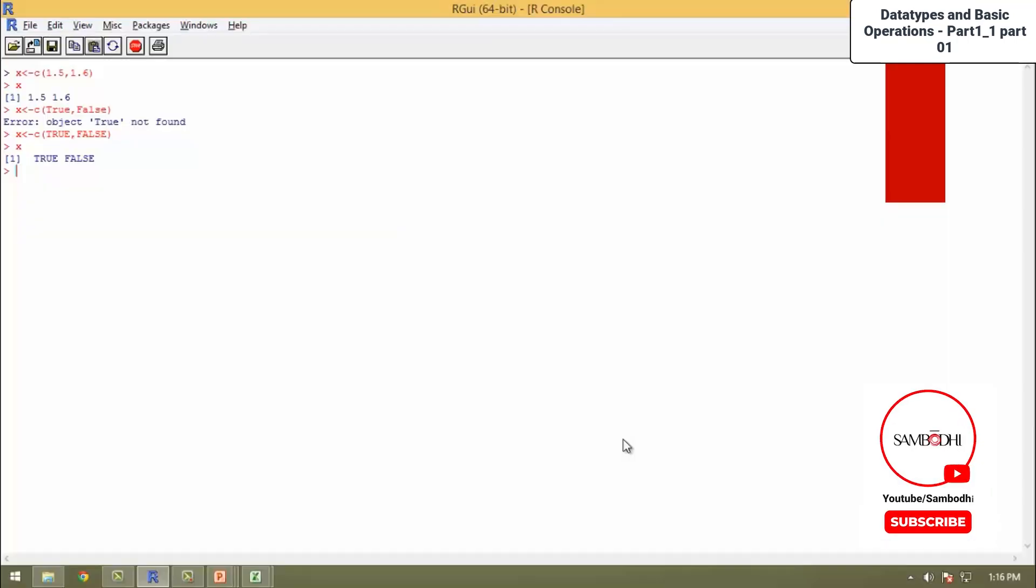Now we can create character vectors, a, b, c. Now we want this vector to contain the values a, b, and c. Now the object a was not found. The error returned specifies that this is not a predefined object in R. This is a string or a character which should be represented only by double quotes. Now this vector is created, this is a character vector, and when you display this character vector, you will get a, b, and c inside.